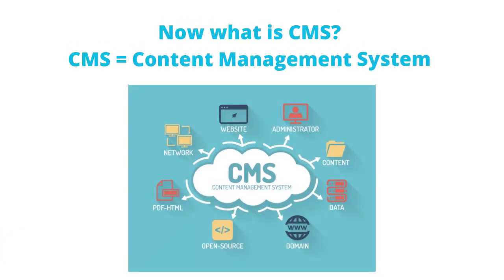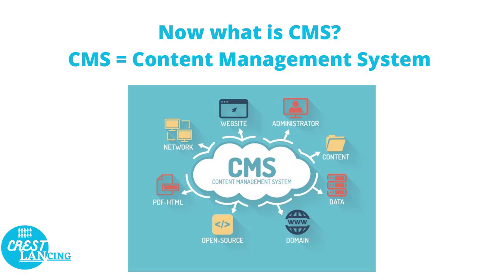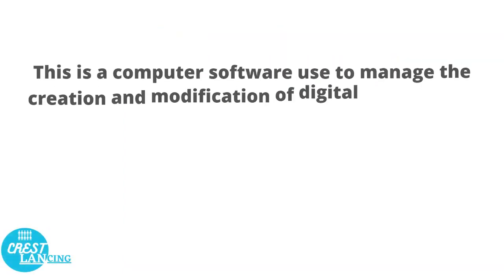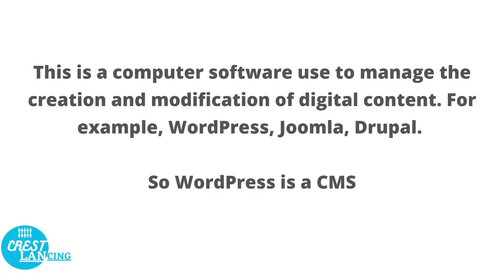What is CMS? CMS stands for Content Management System. As you can see on the diagram, CMS is surrounded by different components: website administration, content, data, domain, open source, PDF, and network. A CMS is computer software used to manage the creation and modification of digital content. Examples of CMS platforms include WordPress, Joomla, and Drupal. So WordPress is a CMS — a content management system.